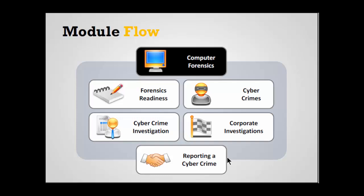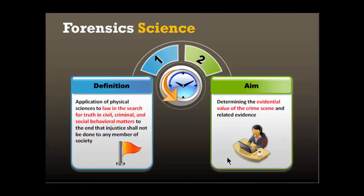Next we have forensic sciences, divided into mainly two categories. The definition of forensic science is: the application of physical sciences to law in the search of truth in civil, criminal, and social behavioral matters, to end injustice and ensure it is not done to any member of society.